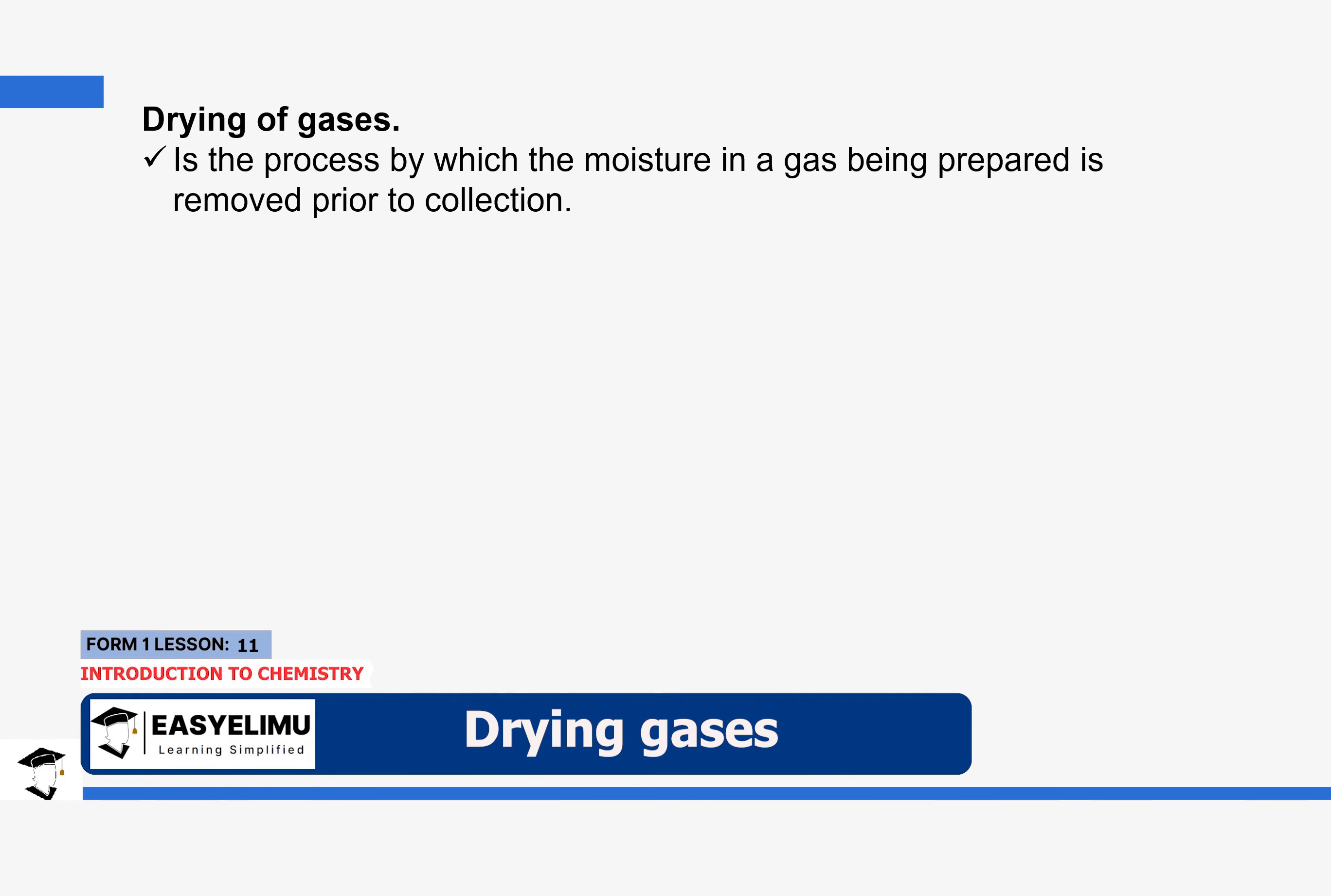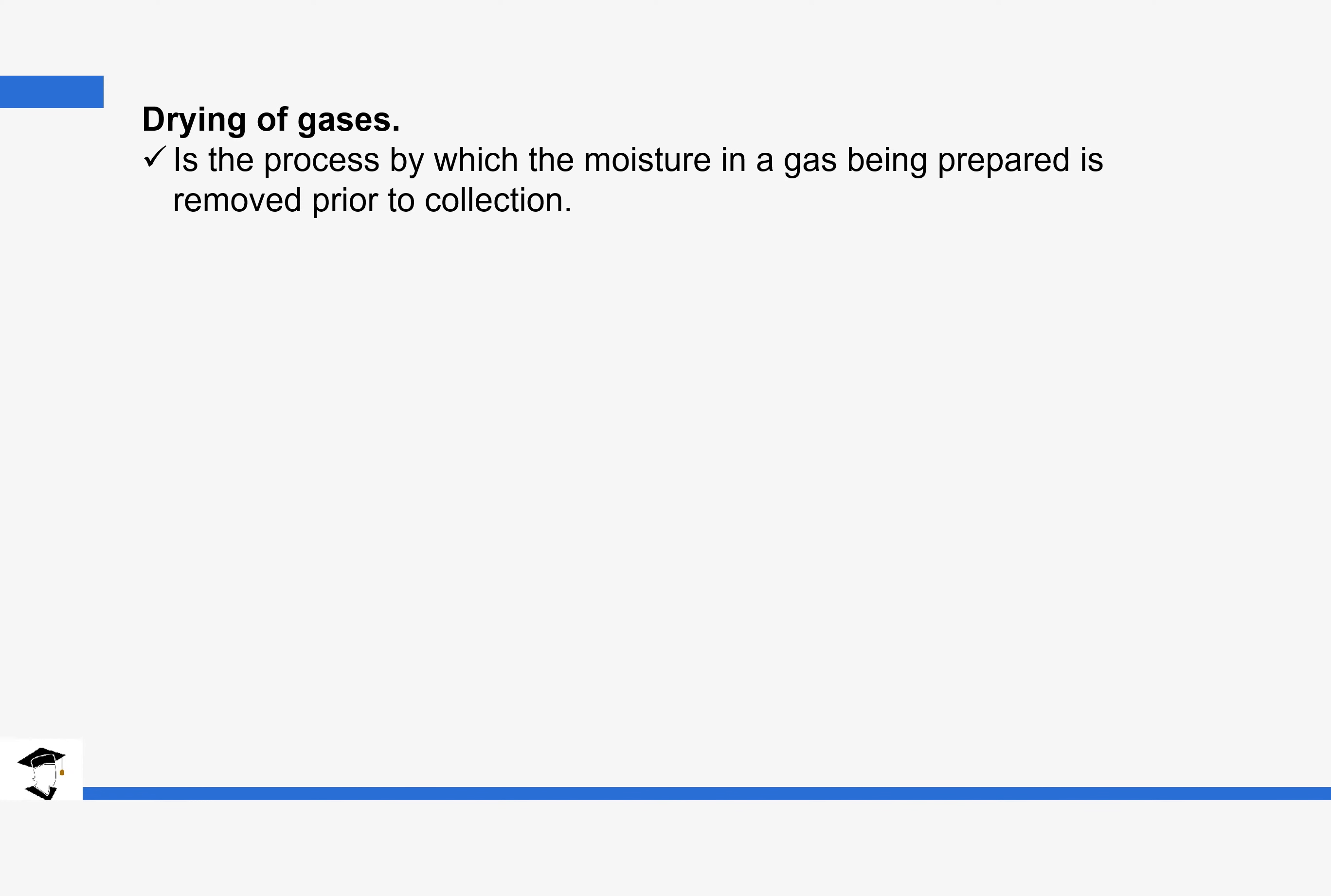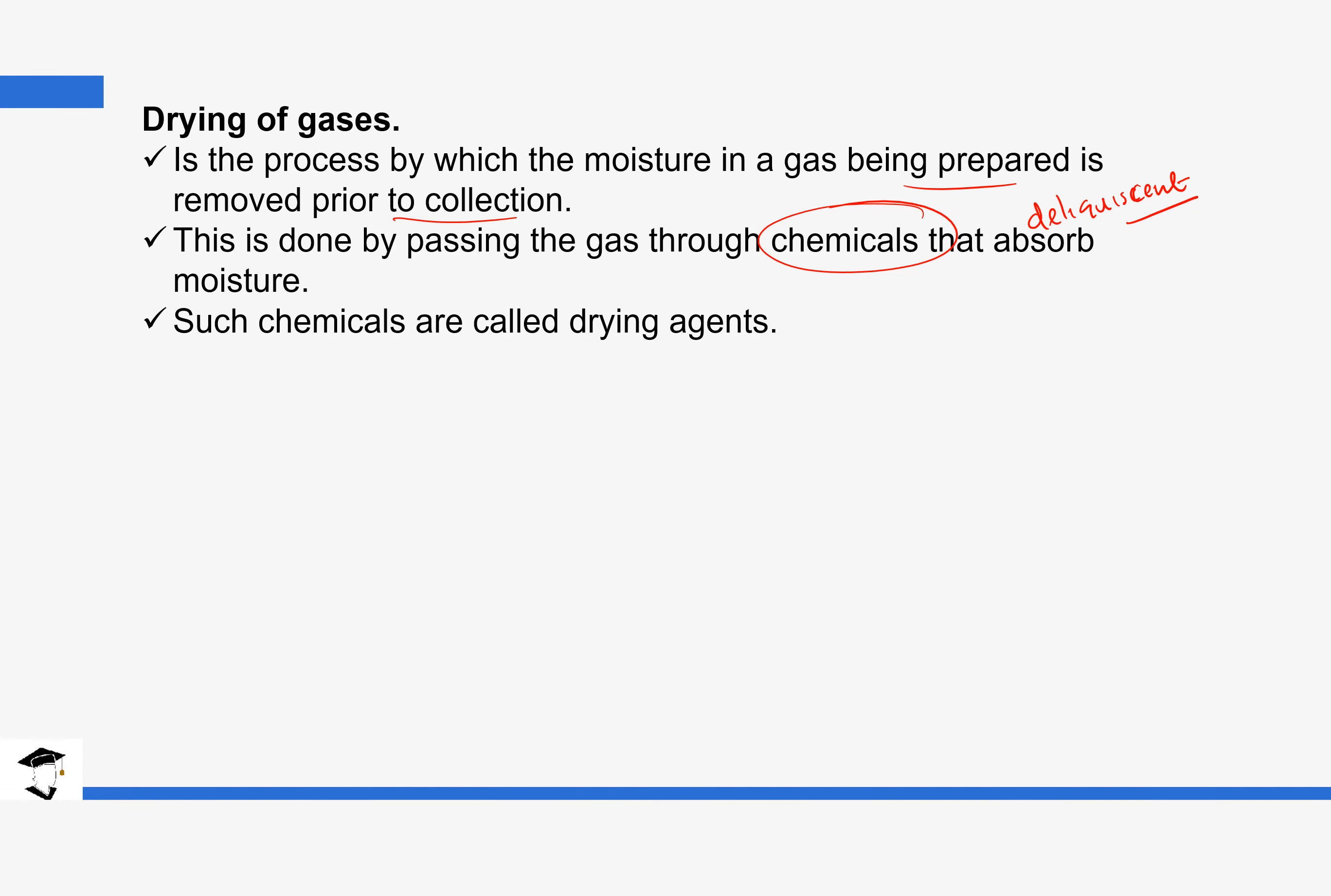So first, drying gases. This is a process where moisture is removed from gas before collection. So we are removing moisture first of all before we collect. And it is usually done by passing the gas through some chemicals. These chemicals have a unique property of absorbing moisture. We actually refer to them as deliquescent substances. They are deliquescent in the sense that they absorb the moisture and form a solution.